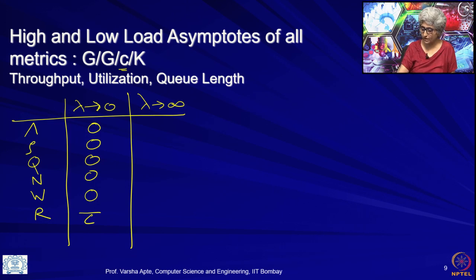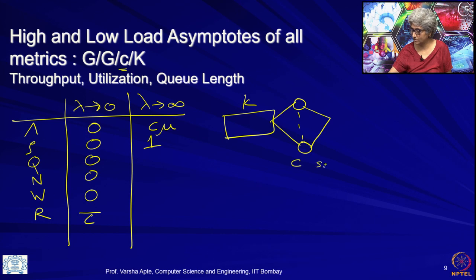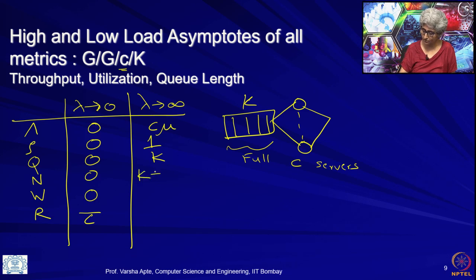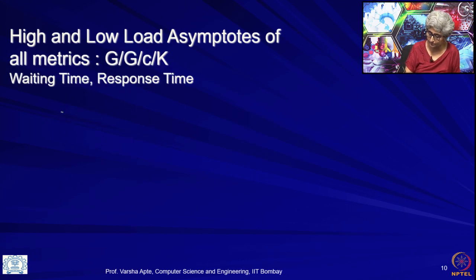Now let us look at what happens as arrival rate increases. Throughput goes to C·mu, server becomes fully busy. We have a K-sized buffer and C servers. As lambda tends to infinity, we expect the queue to become full, so number in queue will be K. Number in system is K plus C. So these values — throughput, utilization, number in queue, and number in system — are all straightforward. The waiting time and response time asymptotes are a little bit more interesting.